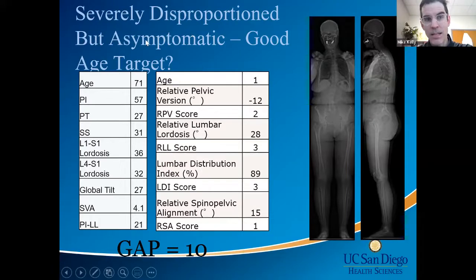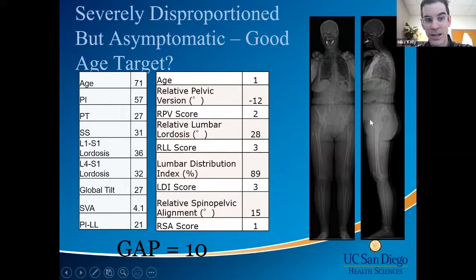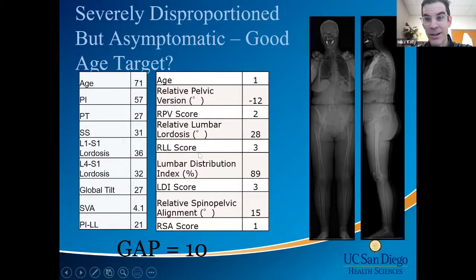Here is a severely malaligned patient, age 71, PI of 57, high pelvic tilt. They have a relative PI-LL mismatch of 21 degrees and global sagittal malalignment — but they are asymptomatic. Now if they are asymptomatic we are not going to operate on them, but if you are going to create a biomechanical construct that is durable and provides no disability, this is not what you're aiming for.